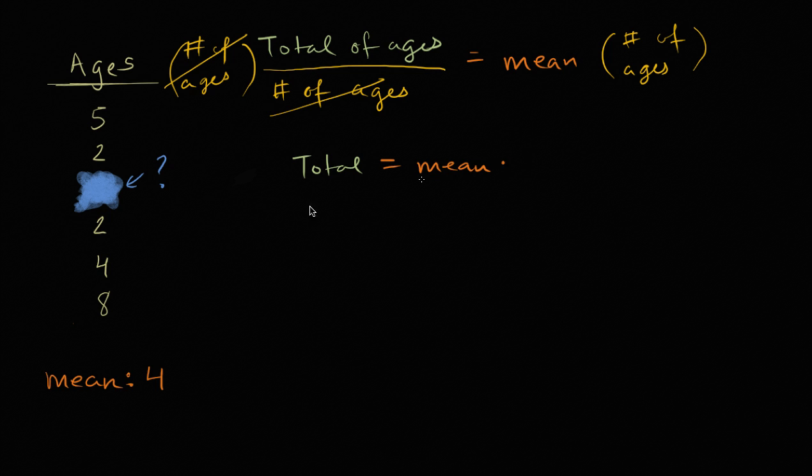Mean times number of data points, or number of ages. So maybe we can use this information, because we're just going to have this missing question mark here, and we know the mean and we know the number of ages. So we just have to solve for the question mark. So let's do that.